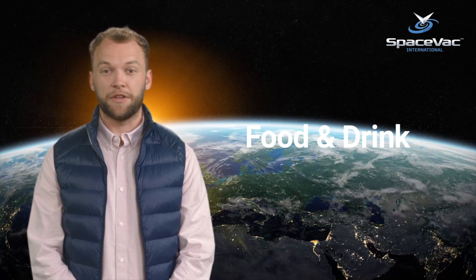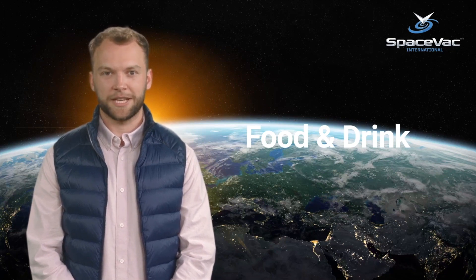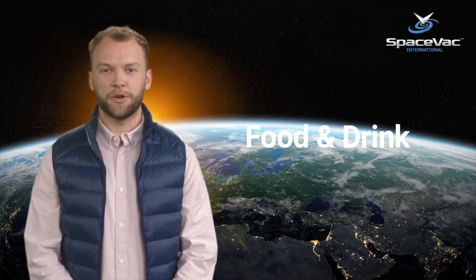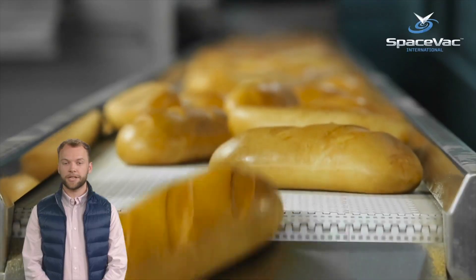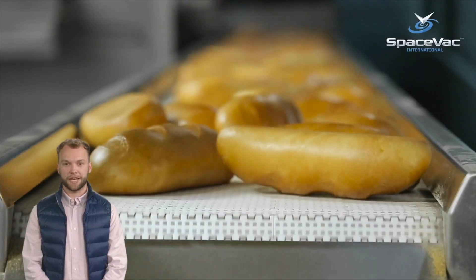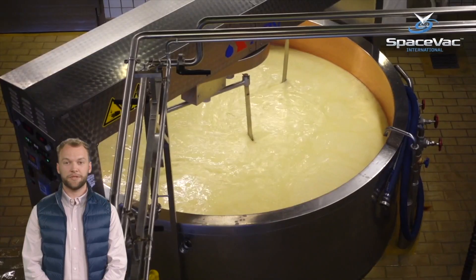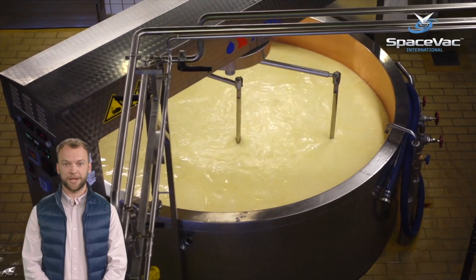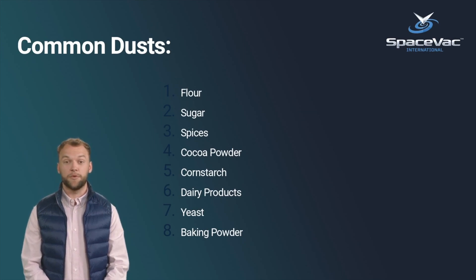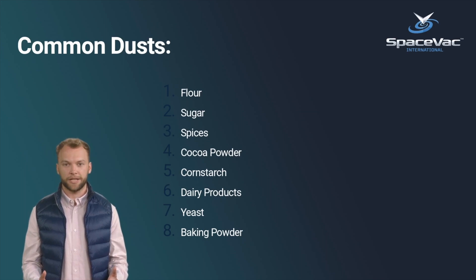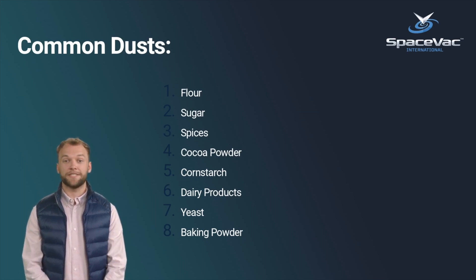Let's start with the food and drink industry. In this industry, ATEX-rated areas are commonly found where food and drink products are processed, stored, and packaged. Bakeries, pet food manufacturers, and even coffee grinders are great examples of ATEX environments in the food and drink sector. There are many common products and ingredients that are defined as combustible dusts, including flour, sugar, spices, cocoa powder, cornstarch, dairy products, and yeast.